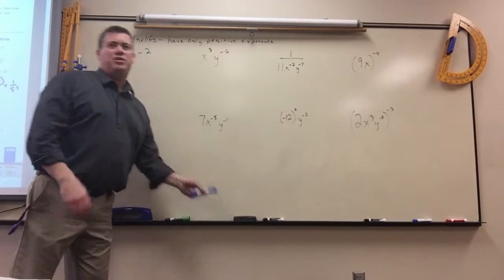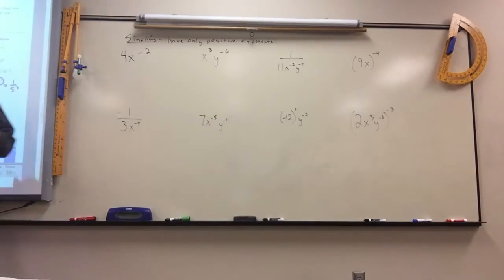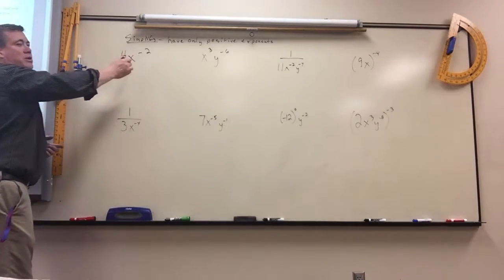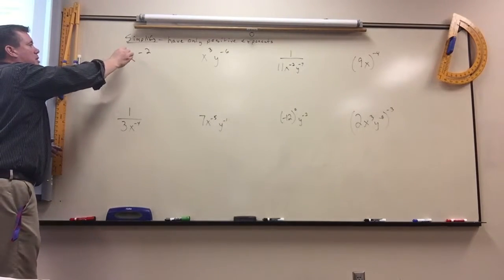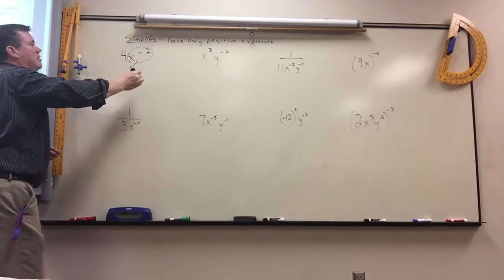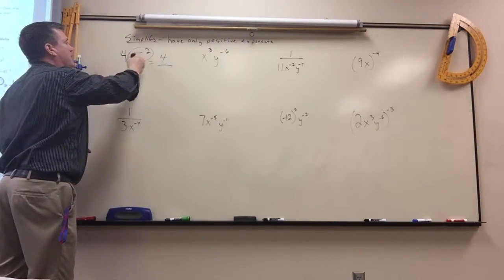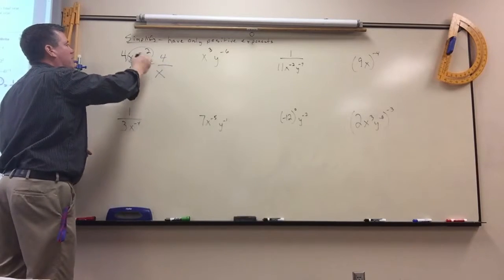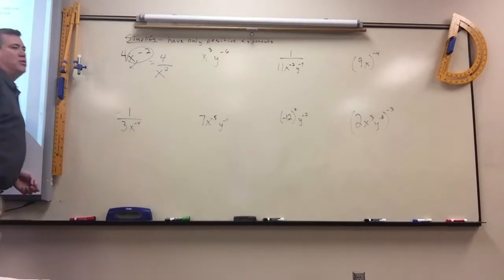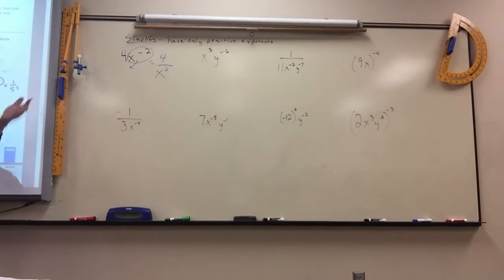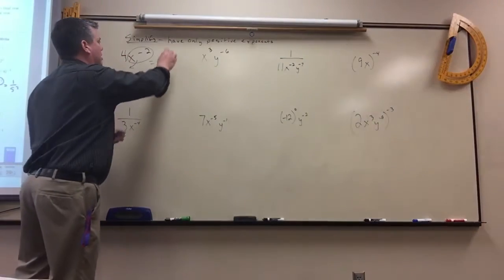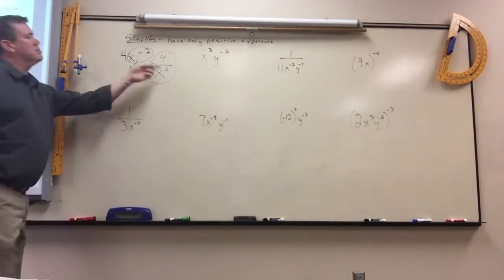For some of these, all you do is move stuff around. This first one, the four is fine where it's at because it doesn't have a negative exponent. But the x has a negative, so all you would do is move it underneath. The four would stay on top, the x would move down. Remember, it's just the exponent that changes signs, not the number or letter itself. We just simplified it so it has all positive exponents.